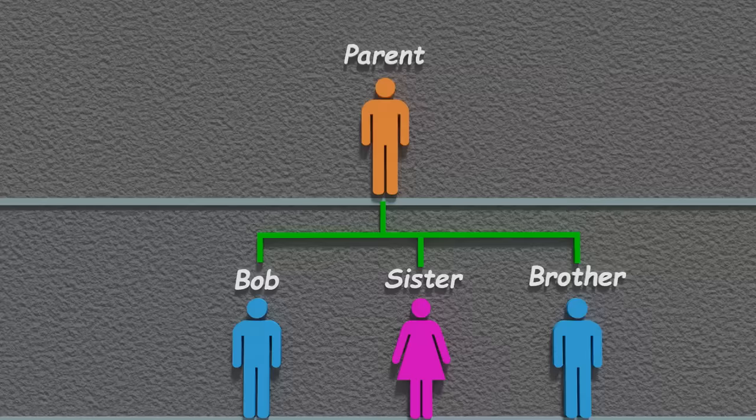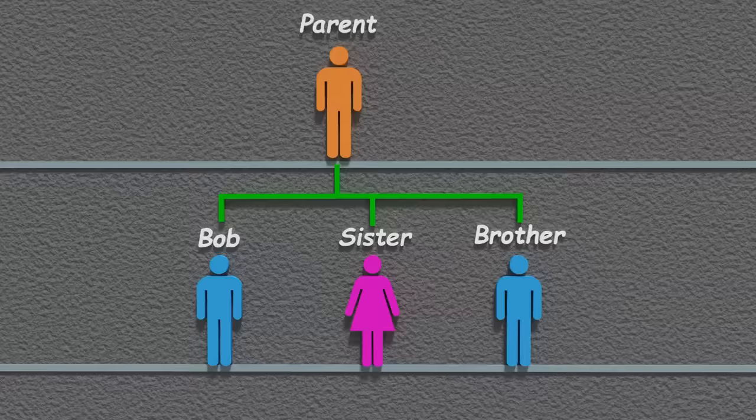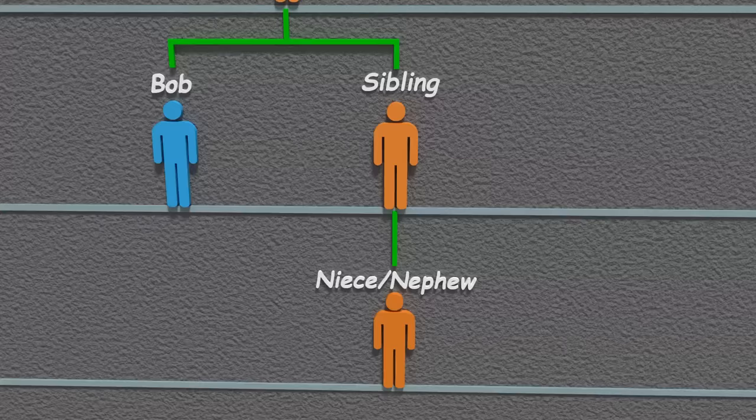We can make this a whole lot simpler by just showing one of Bob's parents. This now represents Bob's mom or dad. We'll do the same thing for his siblings.